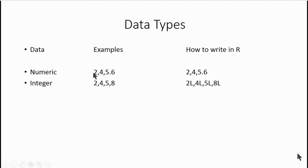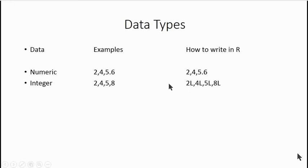The number 2 can be considered as numeric as well as integer, but it depends on how you type it in R. If you type 2 simply, it will be considered as numeric 2. If you put a capital L with this number 2, it will be considered as integer 2. Whenever you want R to consider your numbers as integers, you must put a capital L near your number. For example, to type integer 2, you type 2L; for 4, you type 4L; and similarly 5L and 8L.